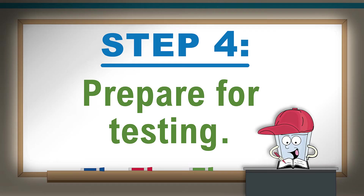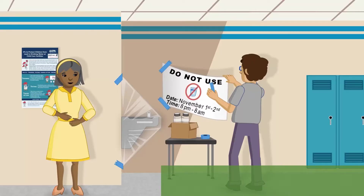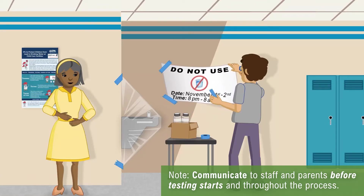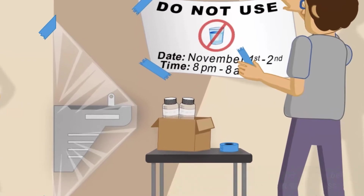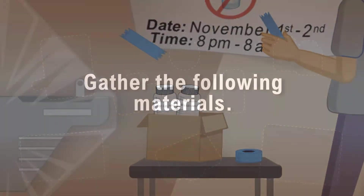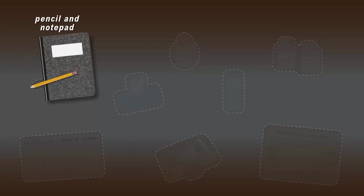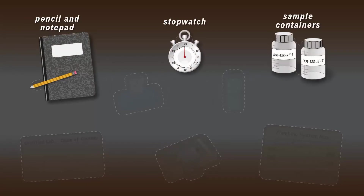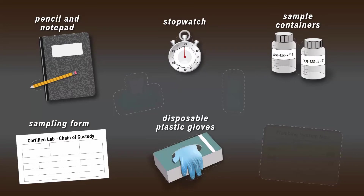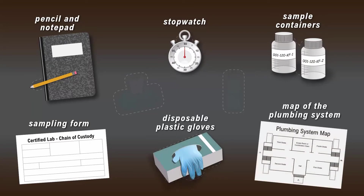Step 4: Prepare for testing. The night before sampling, post signs around your school so that others do not use the water before or during your sampling time, and be sure to label your sample containers with the sample ID. You should also gather the following materials: a pencil, a notepad, a stopwatch, sample containers, your sampling form, disposable plastic gloves, and a labeled map of the plumbing system.